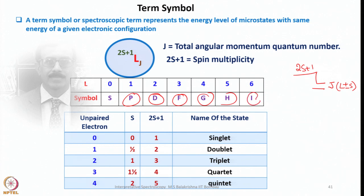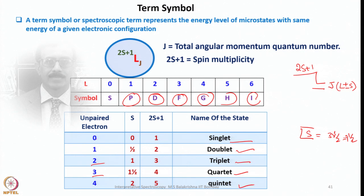J is the total angular momentum quantum number; it can be L plus S or L minus S. The quantity 2S+1 is the spin multiplicity. When there are no unpaired electrons, S equals 0 and 2S+1 equals 1 — this is a singlet. With 1 unpaired electron S equals 1/2, so 2S+1 equals 2 — a doublet. With 2 unpaired electrons S equals 1, so 2S+1 equals 3 — a triplet. With 3 unpaired electrons S equals 3/2, so 2S+1 equals 4 — a quartet. With 4 unpaired electrons S equals 2 and 2S+1 equals 5 — a quintet.